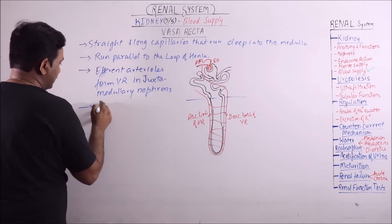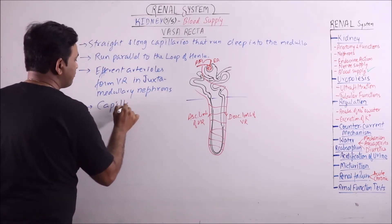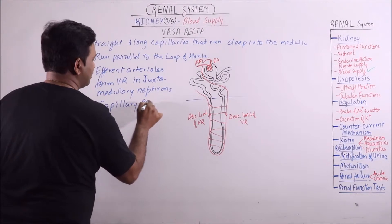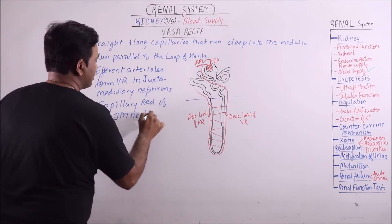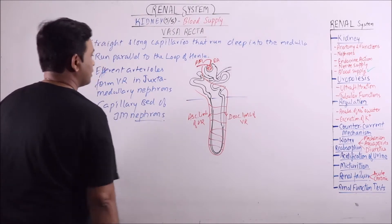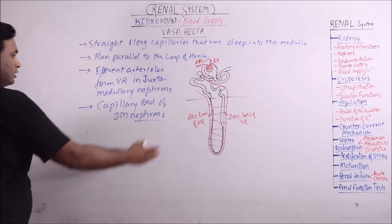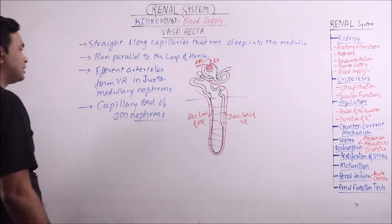So it represents the capillary bed of juxtamedullary nephrons. It also has the descending and ascending limb.